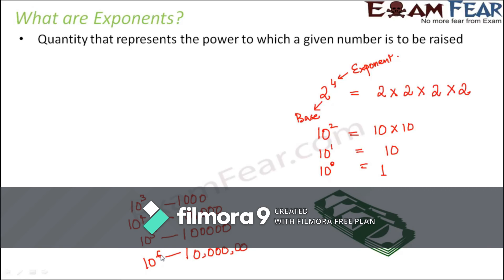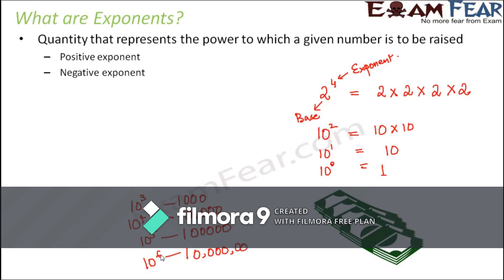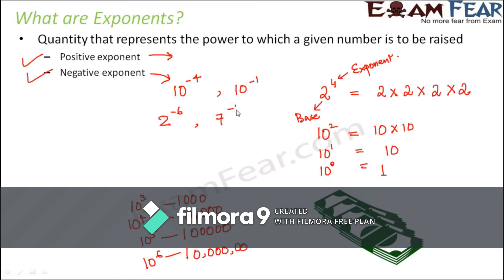Till now the examples have all involved bigger numbers, but how do we represent smaller numbers? When it comes to exponents, there are two categories: positive exponents and negative exponents. Positive exponents — like 2⁴, 10², 10¹, 10⁰ — help us represent larger numbers. For smaller numbers we use negative exponents, such as 10^(−4), 10^(−1), 2^(−6), or 7^(−15). Negative exponents are useful for representing very small numbers.